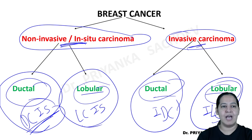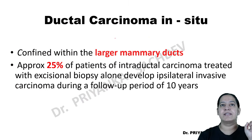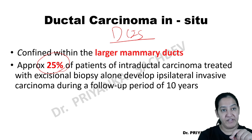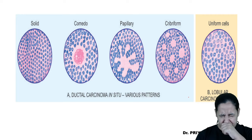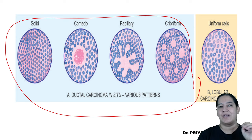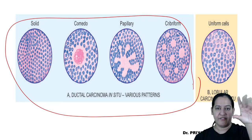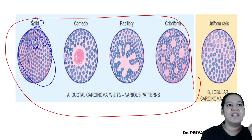Let's start with DCIS — Ductal Carcinoma In-Situ. About 25% of patients with DCIS convert into malignancy in the next 10 years. DCIS has four patterns. This is the diagram. First pattern: tumor cells entirely filling the lumen of the duct — this is known as solid pattern. Dysplastic tumor cells are filling the lumen of the duct entirely, packed together — this is solid pattern.